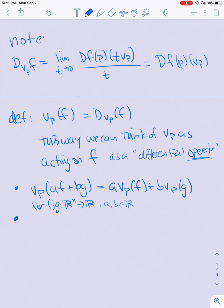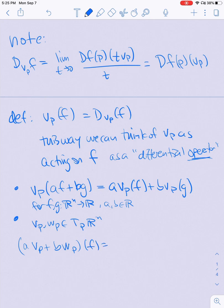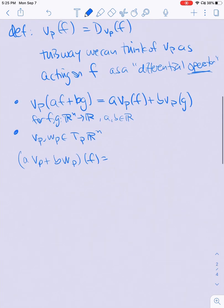Because v_p is an element of a tangent space, if v_p and w_p are both elements of T_p R^n, then if I take a linear combination of vectors and apply them to a function f, I will also get out a linear combination.